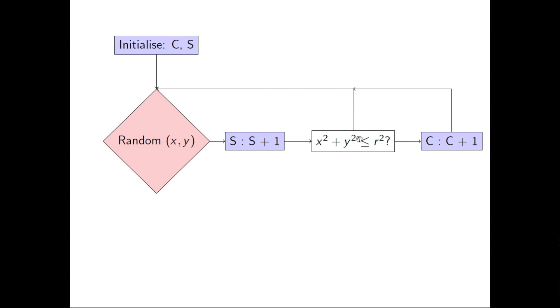If we're in the circle, then we increment C, otherwise we just go and we keep on selecting a bunch of raindrops, and once we have enough raindrops, we just have a little check on S, we'll get that pi is approximately 4 times C over S.